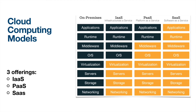Cloud computing offers different kinds of models. The three key offerings are IaaS — Infrastructure as a Service, PaaS — Platform as a Service, and SaaS — Software as a Service. If you want everything handled by a third-party vendor, go for SaaS. If you want to build applications and manage runtime and networking, go for PaaS. If you also want to manage network, hardware, storage, operating systems, and virtualization, go for IaaS. Based on your business requirements, you can choose one of these cloud computing models.